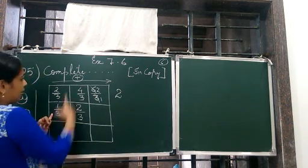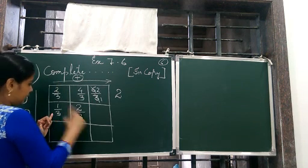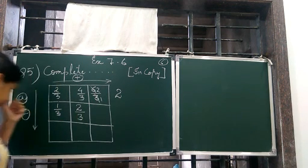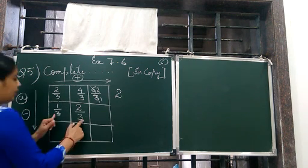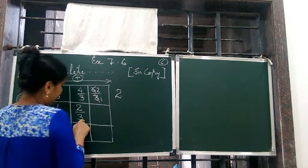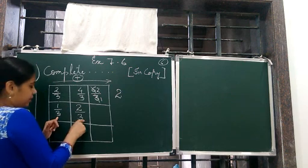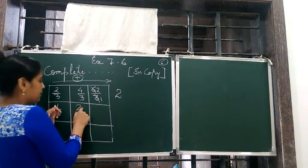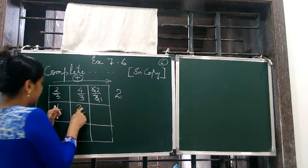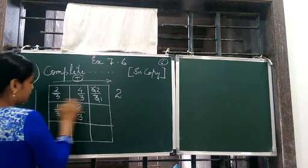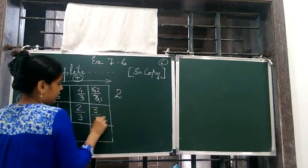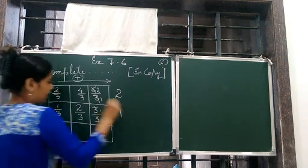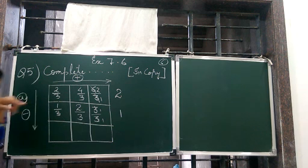Similarly we add going this way, so we add these two. Again we see the denominators — are they same? Yes they are same. So simply we are going to add the numerators. So 2 plus 1 gives us 3, so 3 by 3, that is 1.